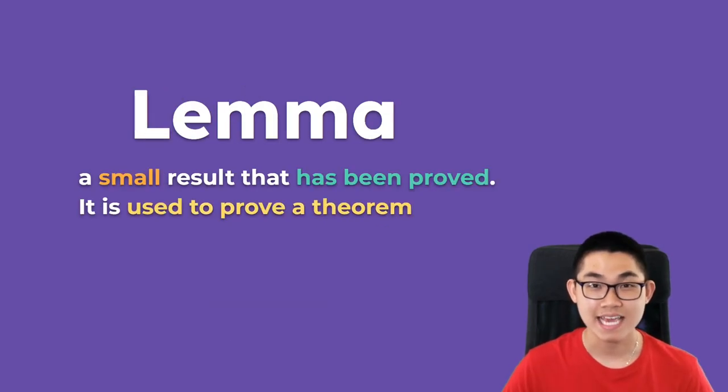A lemma is a small result that has to be proved. And it is used to prove a theorem. So there are three parts to this definition. The first one is that it is a small result. It's not a significant result. Number two is that it must be proved. And number three is that the lemma is used to prove a theorem.